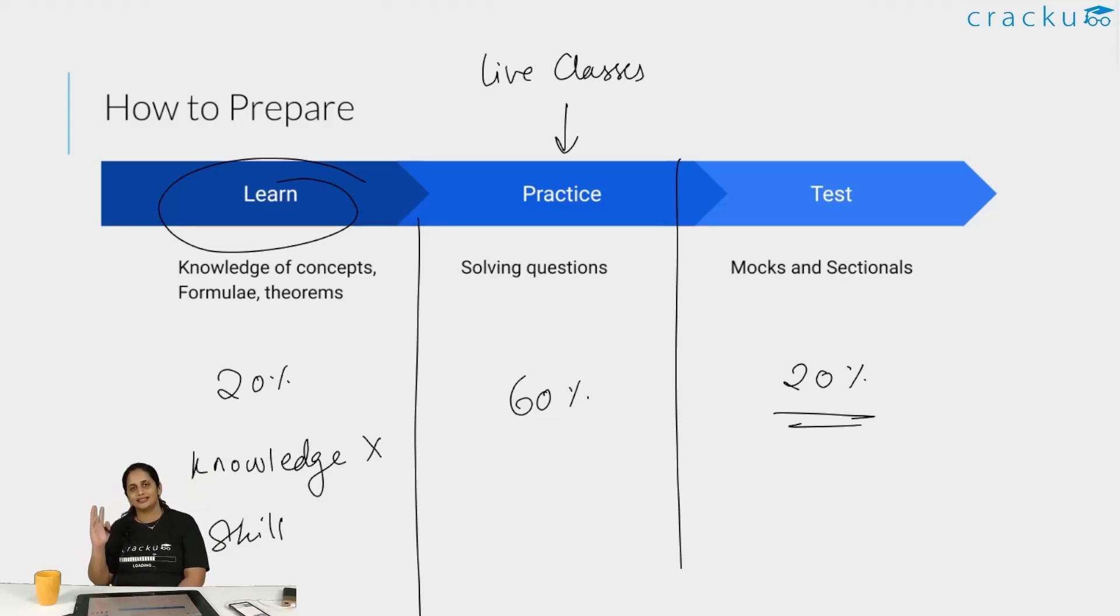And the last and most critical to get to 99 percentile is testing. Test basically means that you give mocks and sectionals. If you give mocks and sectionals, you will get this feedback loop of where you are actually not doing well. This is not a static loop - it's not just learn, practice, solve. No, it's learn, practice, solve, mock, go back and practice questions, solve more.